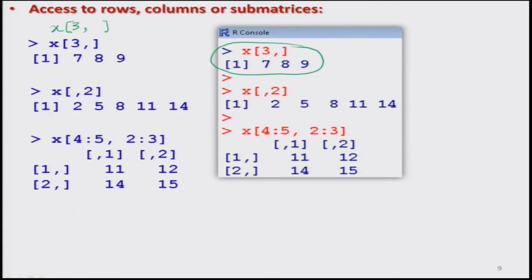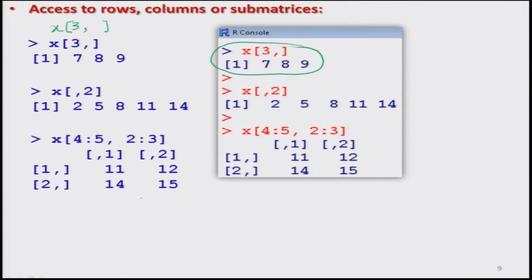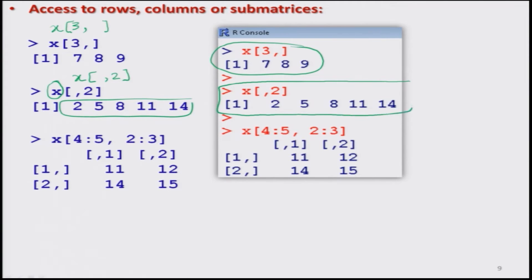Similarly, if you want access to the second column — which contains values 2, 5, 8, 11, 14 — and you want to extract only this column from the entire matrix, you write the variable name x in square brackets, then blank space (do not write anything), then comma, then 2. This gives access to the second column, and you get those values as shown here.